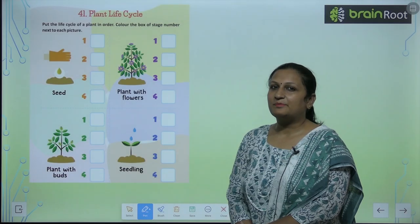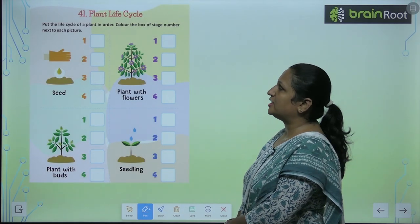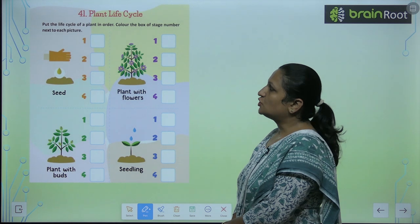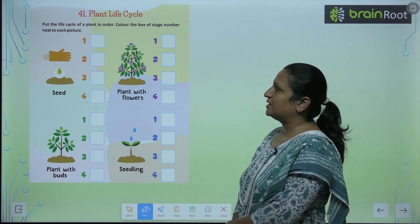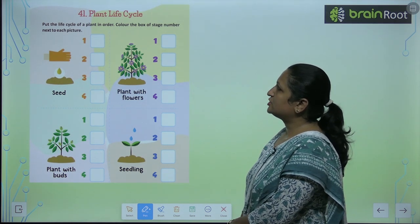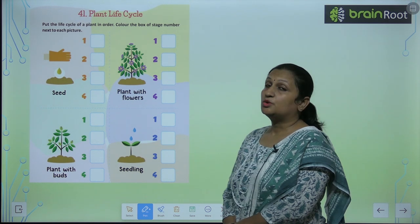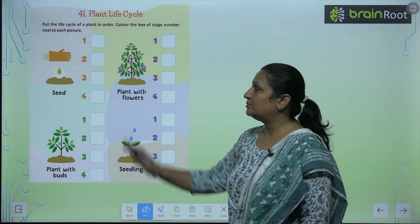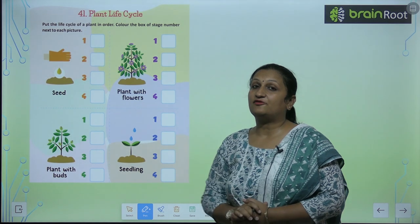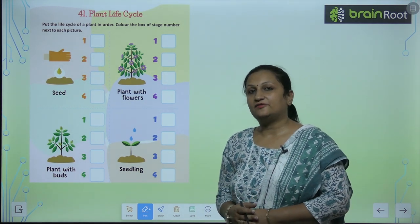Children, let's start with the new chapter which is chapter number 41: Plant Life Cycle. So put the life cycle of a plant in order, and color the box of the stage number next to each picture. Here we have pictures and we have to arrange them according to the plant life cycle.